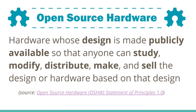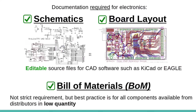So what is open source hardware? It's hardware whose design is made publicly available so that anyone can study, modify, distribute, make, and sell the design or hardware based on that design. In the context of electronics, this means the schematics and board layout are shared under an open source license — the editable source files, such as KiCad or Eagle files, not just an output format. Also included is the bill of materials or parts list, and best practice is to use components available from distributors in low quantities.